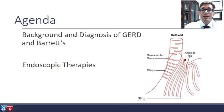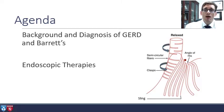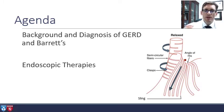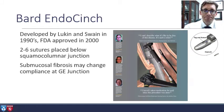Moving on to endoscopic therapies. The goal of these therapies is often to tighten the intra-abdominal esophageal sphincter or the clasp fibers, as well as to pull down on the sling fibers. This is how these procedures are being developed.